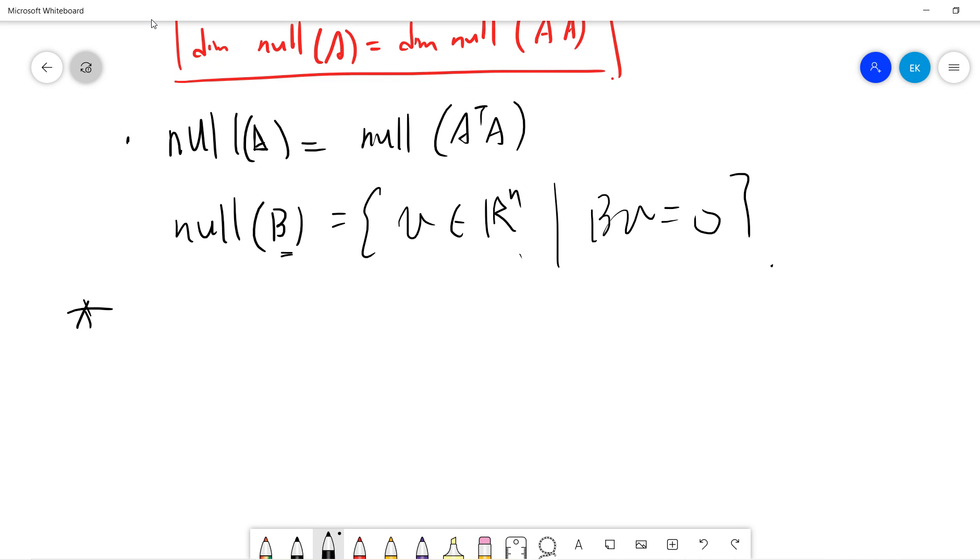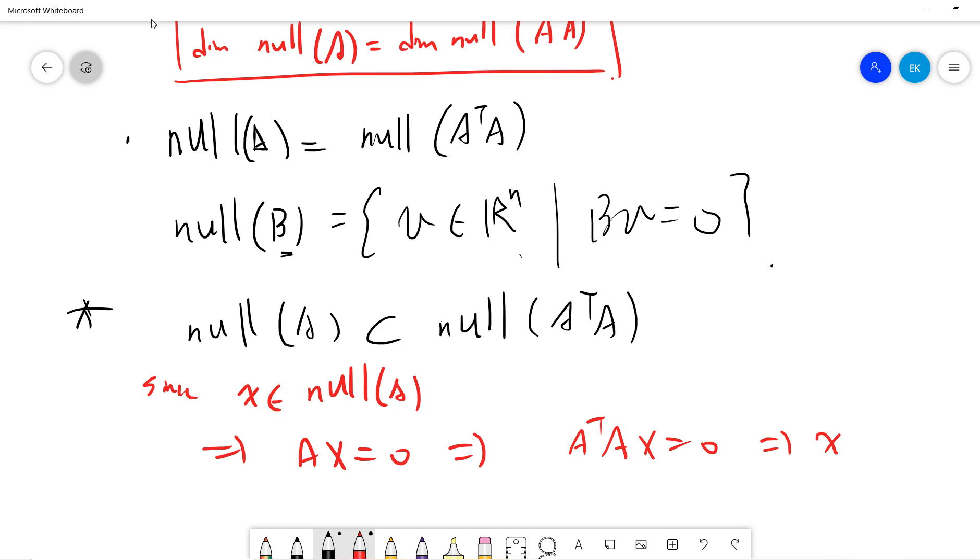First, I want to show that null A is a subset of null A^T A. This is trivial since if X belongs to null A, then A^T A X equals zero, which means X belongs to null A^T A.